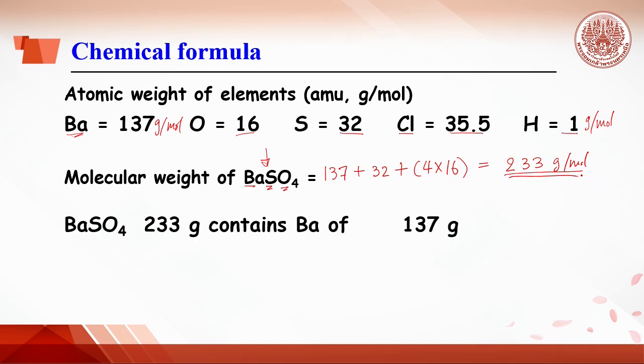What is the meaning of this number? It means that if we weigh barium sulfate 233 grams, it will contain barium of 137 grams. So, we extrapolate to 100 grams. It will have barium of 137 times 100 divided by 233, which equals 58%. Barium sulfate contains barium about 58%.